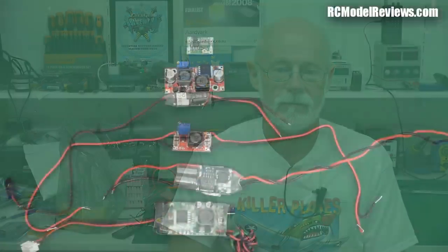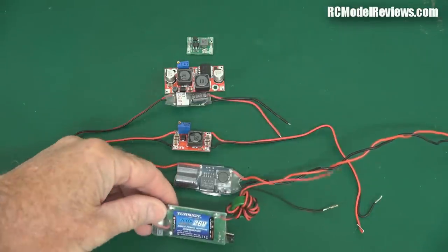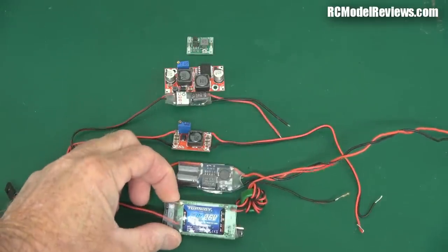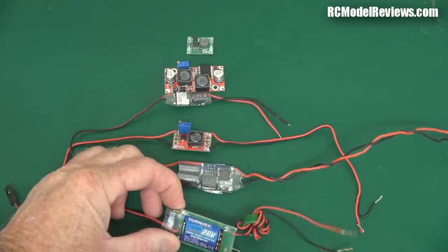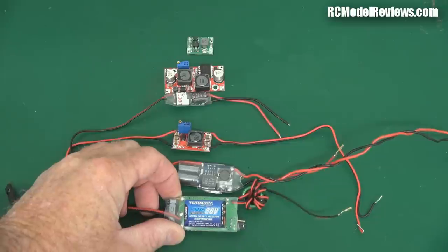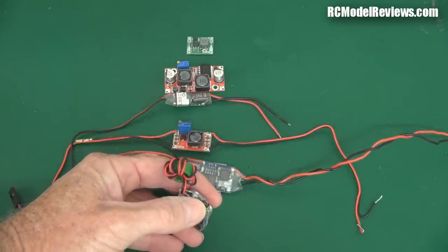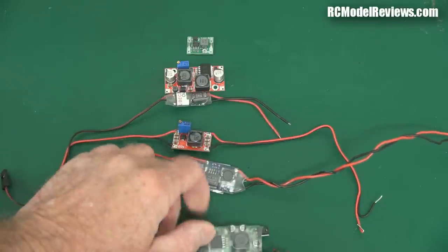That's where these BECs come in. Let's have a look at the different types of BECs, how some of them work, and how you choose a BEC for the type of model you're going to be building. Here is a delightful selection of BECs for you to have a look at. There's big ones like this. This one, you can plug this into your 6 cell lipo pack, and it will drop the 22 point something volts, 26 volts fully charged, down to the 5 or 6 volts you need for your receiver and servos. It has a little jumper on the side to select whether you want 5 volts or 6 volts. So that's one BEC.